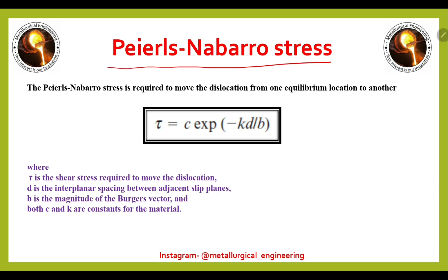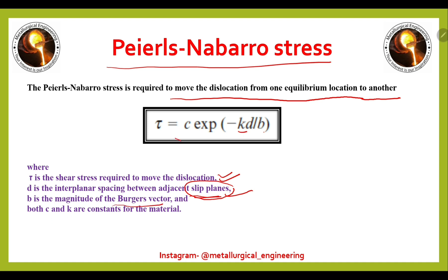The next topic is Peierls-Nabarro stress. This is the stress required to move a dislocation from one equilibrium location to another, represented as: τ = C · exp(−KD / B). Here τ is the shear stress required to move the dislocation, D is the interplanar spacing between adjacent slip planes, B is the magnitude of the Burgers vector, and C and K are constants. You can get one numerical problem on this formula.